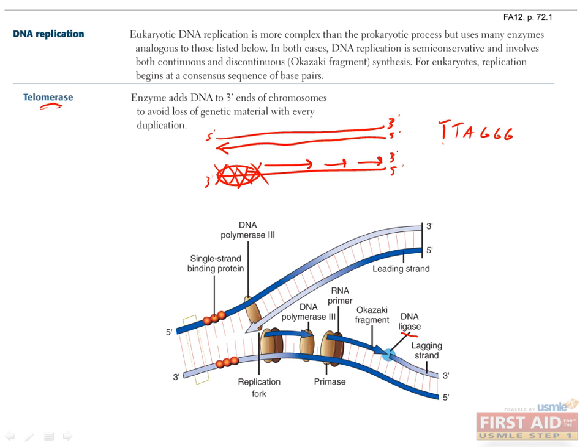In adults, telomerase is only expressed in cells that need to divide a lot, such as stem cells and some cells in the immune system, although mutations that cause telomerase to be expressed in other cell types are one of the things that are necessary for a neoplastic transformation, since without telomerase, even cancer cells will lose the ability to divide after a while.